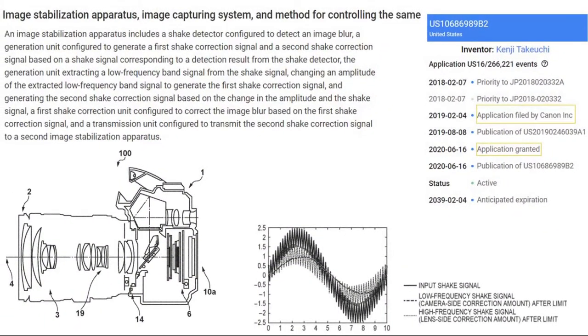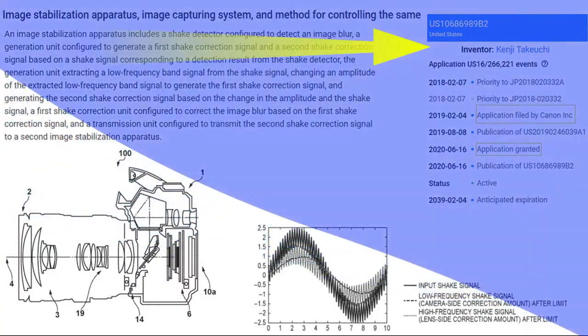Coming to the patented invention, it proposes image stabilization apparatus which detects shake. Upon detection of shake, two shake correction signals get generated.